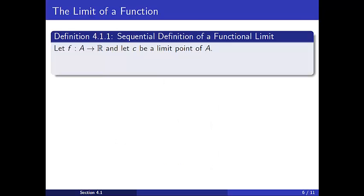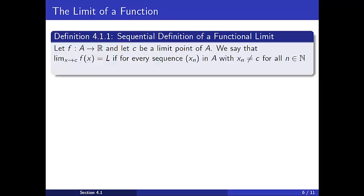Our formal definition of the limit of a function is as follows. Let f be a function from A to R, where A is a subset of R, and let c be a limit point of A. We say that the limit as x approaches c of f of x equals l if for every sequence x sub n chosen so that: one, all the terms are in A; two, none of the terms are equal to c; and three, the sequence x sub n converges to c — then it follows that the sequence f of x sub n converges to l.